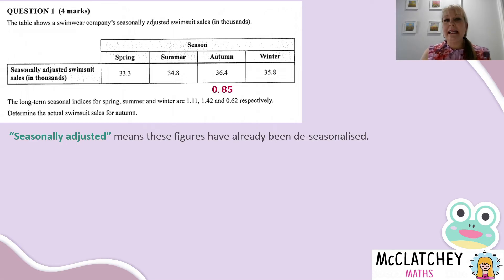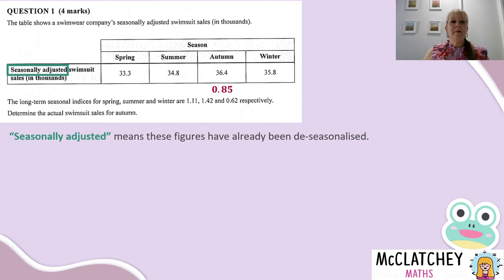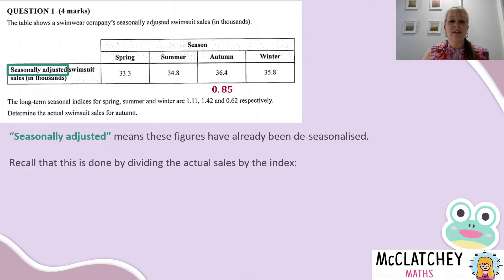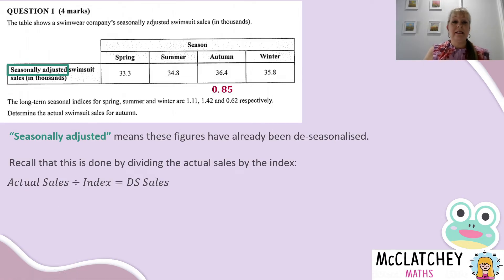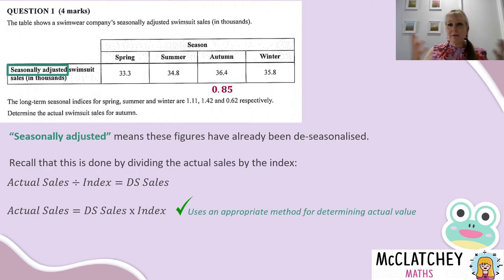Remember that seasonally adjusted means they've already been de-seasonalized. We need to basically put the seasonality back in and work backwards to the actual sales. Be aware that the language could change for different particular situations. The way we originally got the de-seasonalized figure was to take actual sales and divide by the index 0.85. So to go backwards, instead of dividing, we're going to multiply. Actual sales divided by the index equals the de-seasonalized sales — so to get actual sales, we multiply.